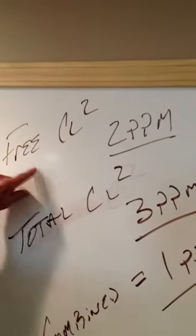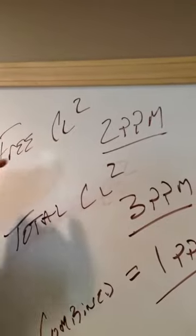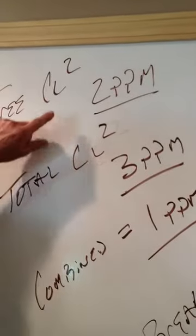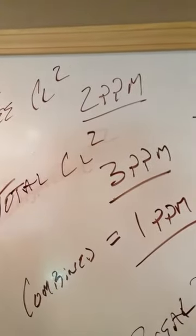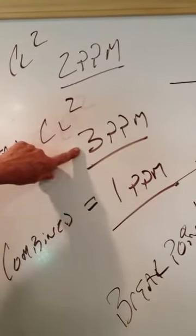First, you test the water and get your free available chlorine—that's the good chlorine in the pool. Then you do a total chlorine test. In this instance, we had 2 ppm of free available chlorine. We did a total chlorine test and ended up with 3 ppm.